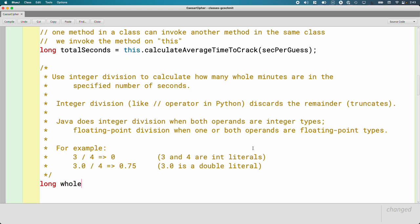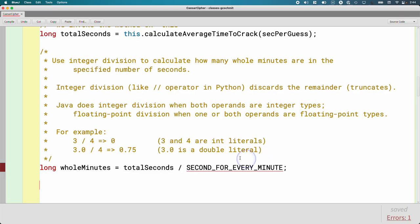How can we use this in a useful way? Let's create a new variable called wholeMinutes. We're going to take totalSeconds, which could be a really big number, but let's say it's 130, and divide it by our final variable, our constant from yesterday called SECONDS_FOR_EVERY_MINUTE. So 130 divided by 60 is going to give us 2 because we're doing integer division. This gets us part of the way there.